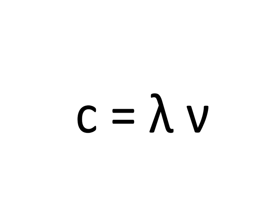We can therefore relate the wavelength and the frequency of electromagnetic radiation using this equation. C, the speed of light, is equal to the wavelength, lambda, times the frequency, nu.